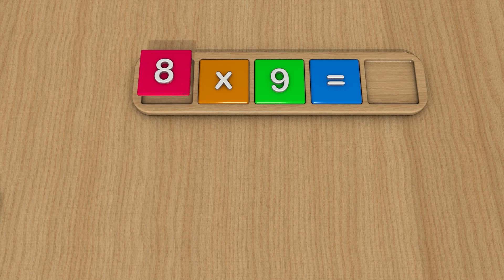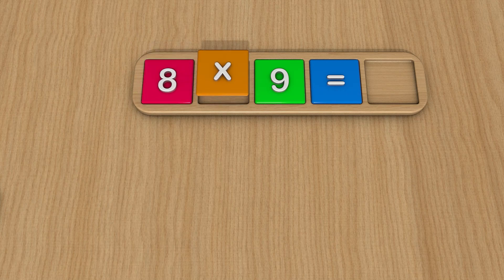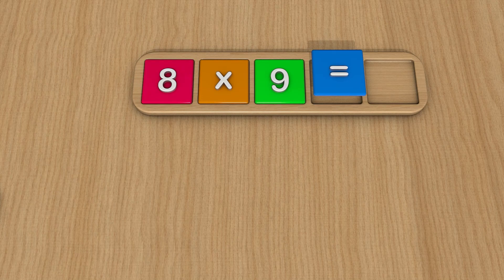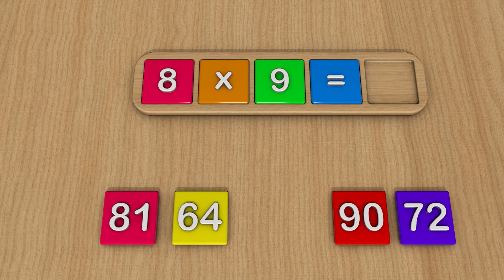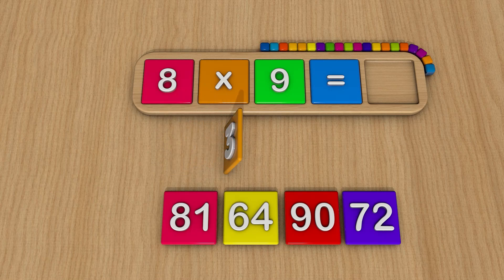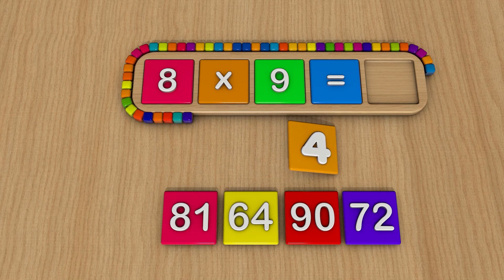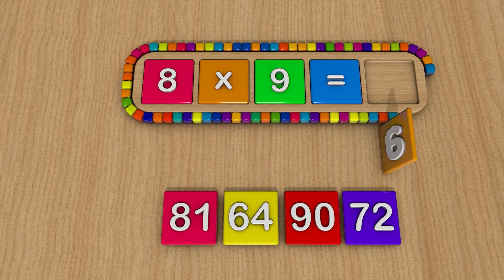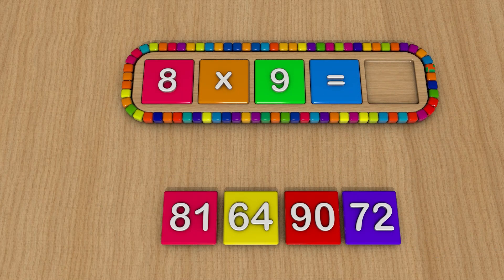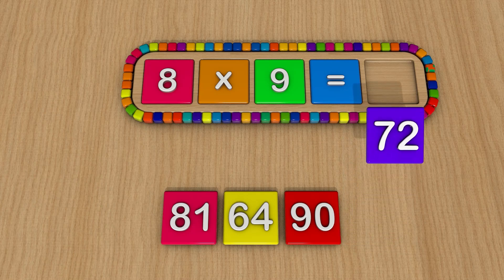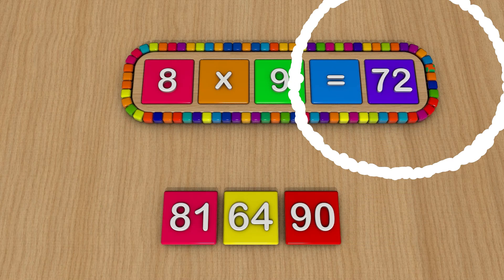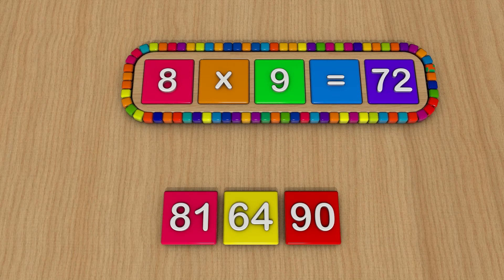8 times 9 equals... 72. 8 times 9 equals 72.